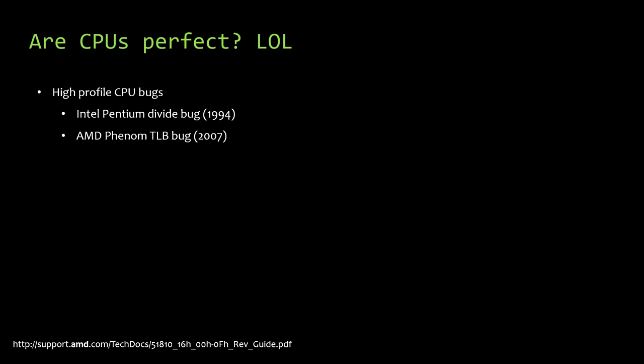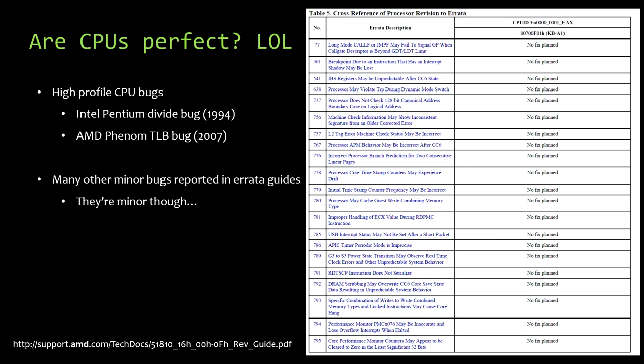CPUs must be perfect then? Well, obviously not. Many of you are familiar with some infamous CPU bugs — the Pentium divide bug in the 90s, the AMD TLB bug in 2007. But there's a lot more than that. If you open up the errata guide for a modern CPU, you'll see entries with 'no fix planned' on the right side. That said, these issues are very minor and in most cases simply don't matter, or there are software workarounds available. But there are a lot that still make it into silicon.